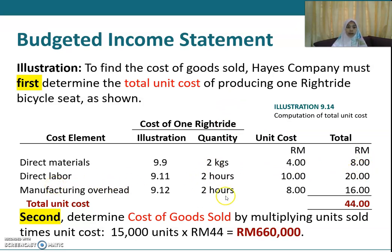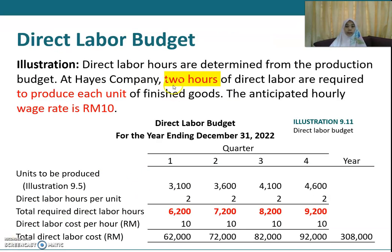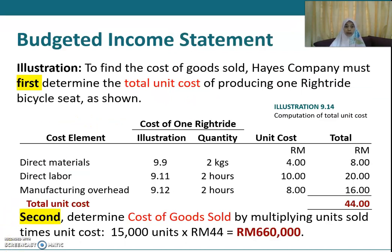For direct labor, you require two hours and the cost per hour is ten ringgit. You can refer to the direct labor budget prepared earlier at illustration 9.11, where two hours of direct labor are required to produce each unit of finished goods and the wage rate is ten ringgit per hour. So the total direct labor cost per unit is ten times two, giving you twenty ringgit.